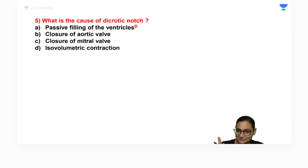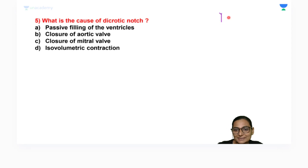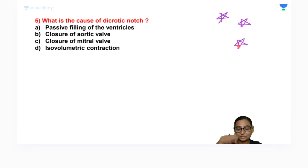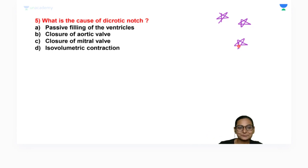To remember: resting membrane potential of rods is minus 40 mV in the dark. When light falls it becomes minus 70 mV — more negative, hence a hyperpolarizing action potential. The mediator is transducin, activated by metarhodopsin II from the rhodopsin cascade.